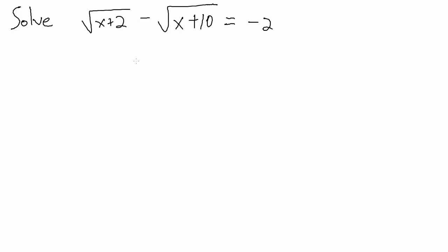We're going to have to do the process twice. Pick one radical, isolate it, square both sides, then isolate the remaining radical and continue. Which one do we isolate first? It doesn't really matter — maybe whichever is easier. In this case, the square root of x plus 2 is better to isolate because it doesn't have a minus sign in front of it. Isolating the other one would give us too many minus signs to deal with.